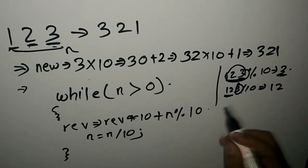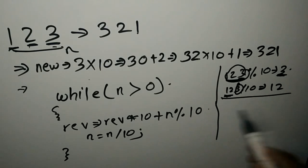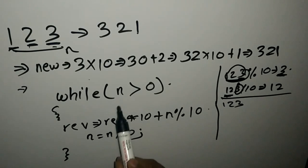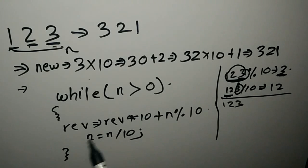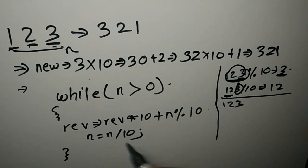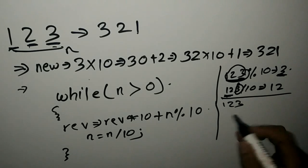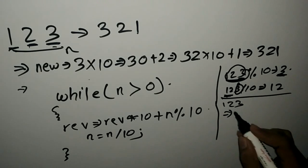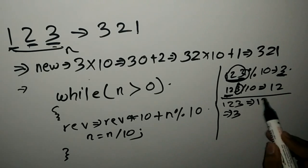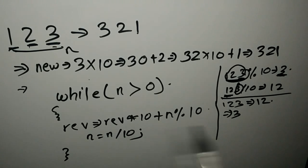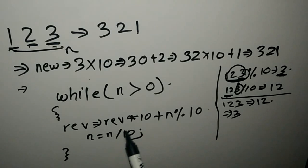This is the logic for reversing the number. Let's take the same example: 123. According to our logic, 123 is greater than 0, so reverse is equal to reverse into 10. Currently reverse is 0, so it won't affect anything. n mod 10 is 3, so now our value in reverse is 3. Then we divide n by 10, so 123 becomes 12.